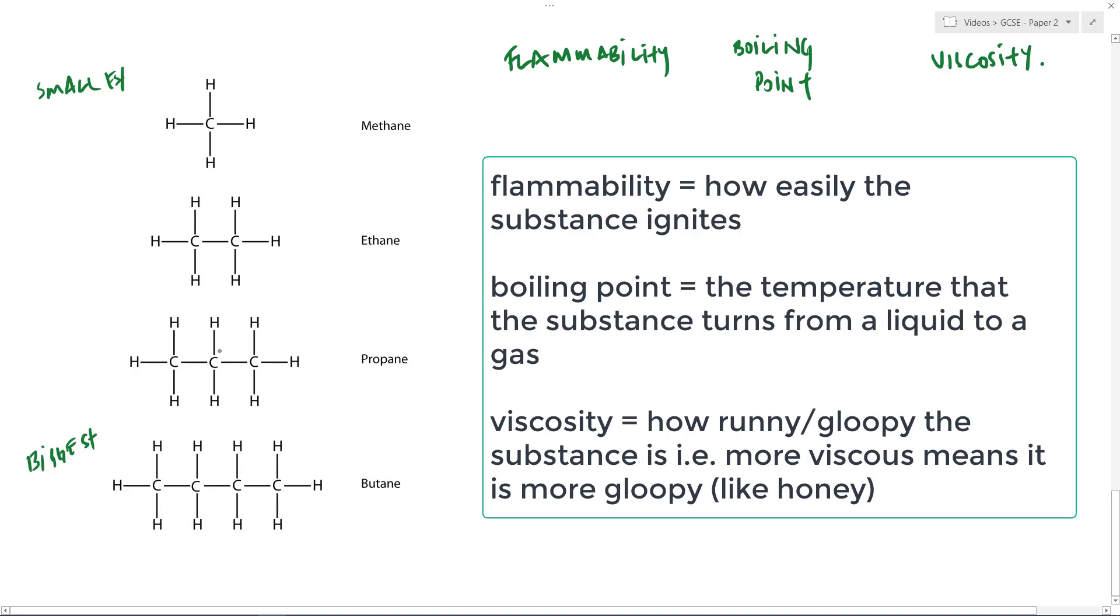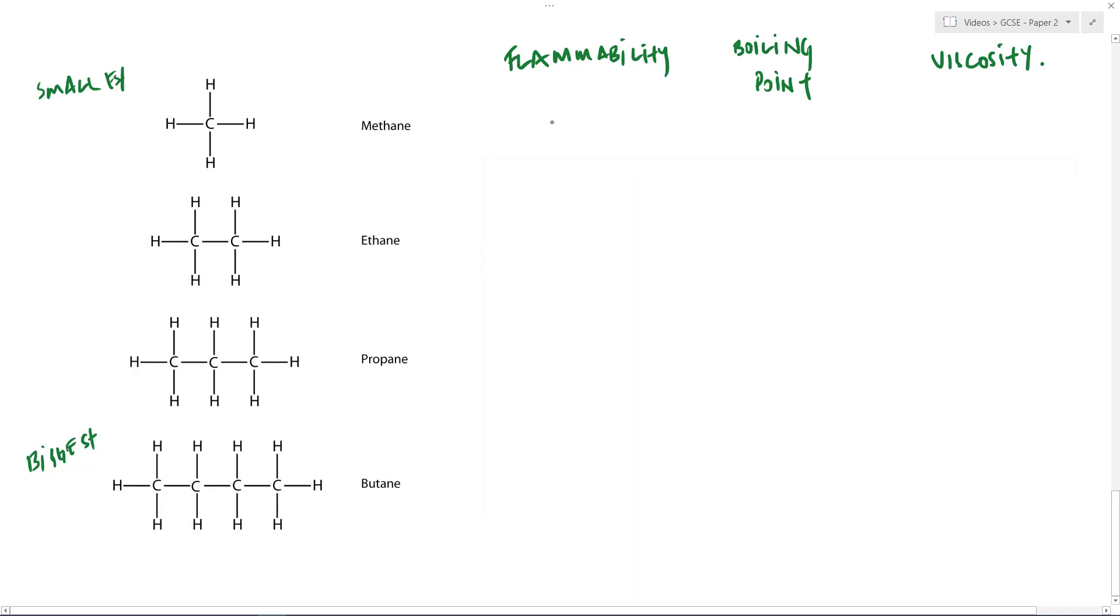As we get bigger, and maybe these four aren't the best examples to use because they're all quite small. But as we get bigger and we go up to say 10 or 20, 30, 40, 60, 70, 100 carbons in the chain, that gets much more difficult to make it light. So what we find then is, as we go down here from smallest to biggest, this flammability decreases. So basically what I'm saying is the bigger the molecule gets, the less flammable it is.